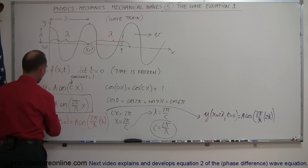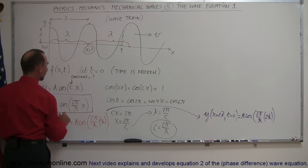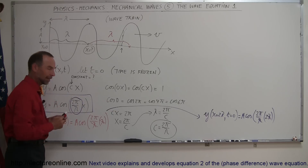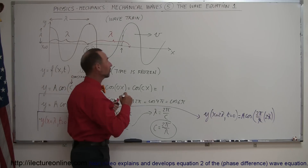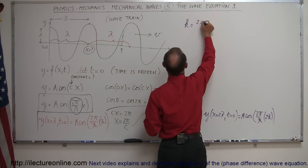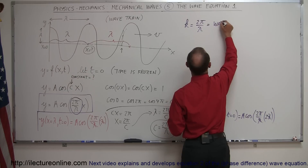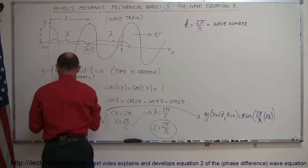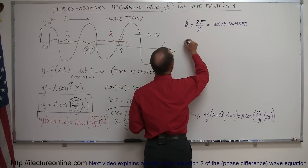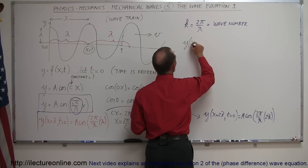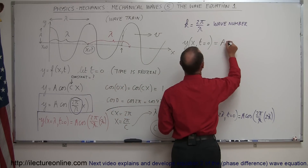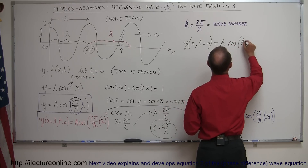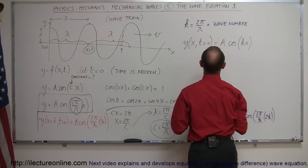So y, as a function of x and t (with t set to zero), equals A times the cosine of (2π/λ) times x. This constant 2π/λ is very special — we call it the wave constant, and we give it the symbol k. So k equals 2π/λ, known as the wave number or wave constant. The wave equation is then written as: y(x, t) equals A times the cosine of kx, where k is understood to be 2π/λ.